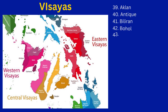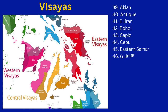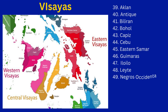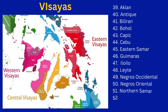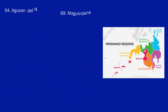In the Visayas, we have Aklan, Antique, Biliran, Bohol, Capiz, Cebu, Eastern Samar, Guimaras, Iloilo, Leyte, Negros Occidental, Negros Oriental, Northern Samar, Samar, and Southern Leyte.